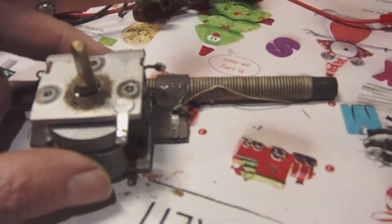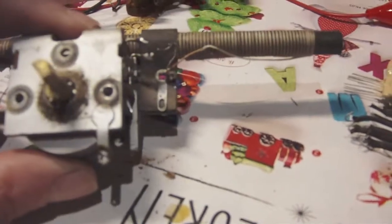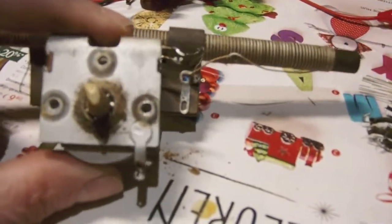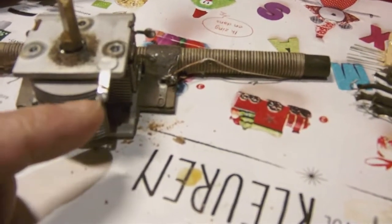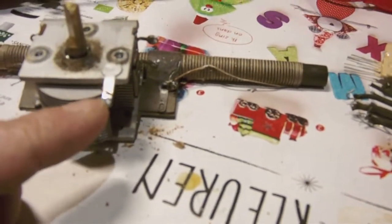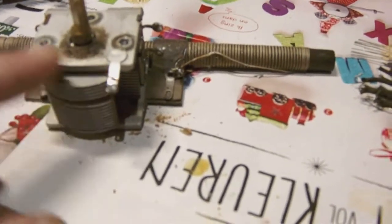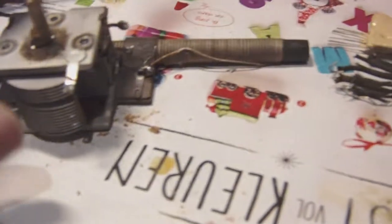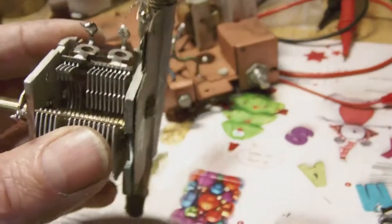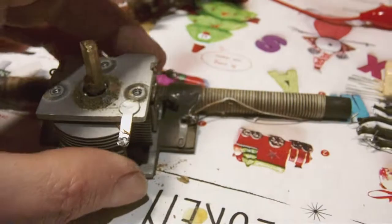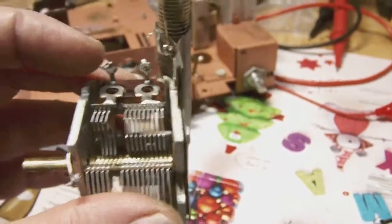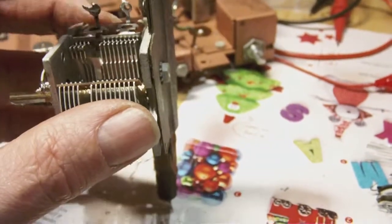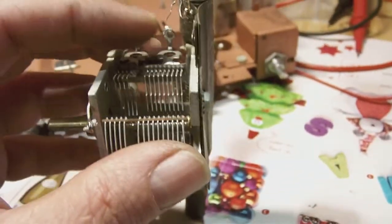Unmounting the variable capacitor turned out not too difficult to do. What you really need to do is unsolder a lead going to the mass of the variable capacitor, and then two leads going to the body of the variable capacitor. Then you need to unsolder two leads, each one going to one part of the variable capacitor you see here.